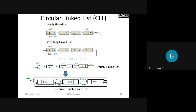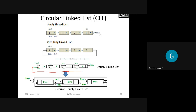When the next address field of the last node points to the first node, as well as the previous address field of the first node points to the last node, and the next address field points to the head node - in that case, the linked list is called a circular doubly linked list.